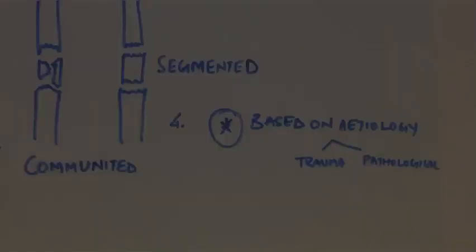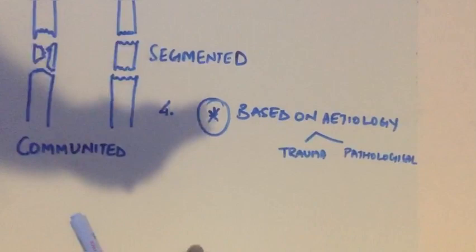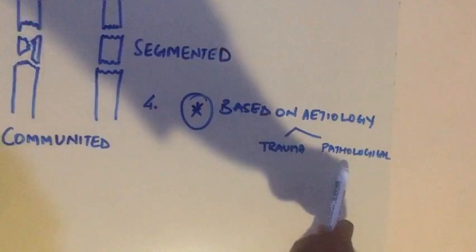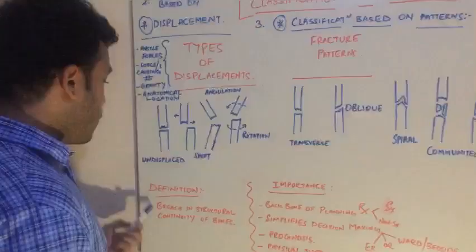In the coming lecture we would talk more about the pathological types of fractures and the causes of fractures based on pathology. When can you say that a bone has been fractured? By definition, a breach in structural continuity of a bone or bones is called a fracture.